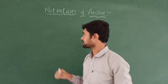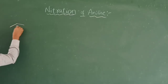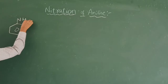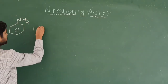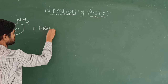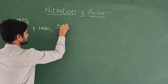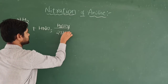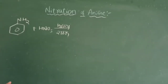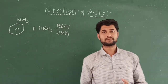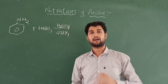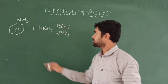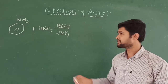Aniline reacts with a mixture of HNO3 and H2SO4 at 288 Kelvin to produce the nitro group. Aniline normally undergoes electrophilic substitution very readily at ortho and para positions as the major products, but let's see what happens with these strong acids.